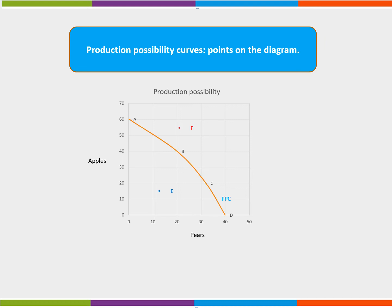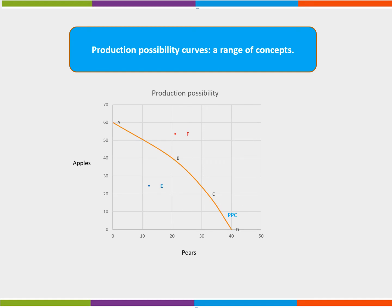Point F is unobtainable as there are not enough resources to produce this level of output. The PPC can be used to show a range of concepts. As we have seen, opportunity cost is the benefit foregone of the next best alternative. By choosing Good X, the economic agent sacrifices the benefit of using Good Y.